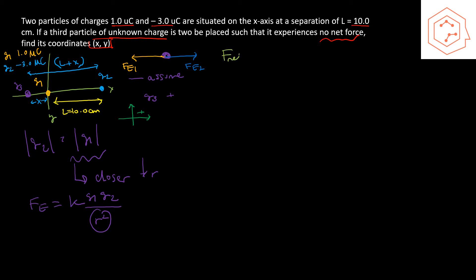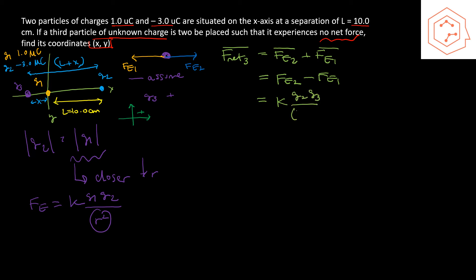The net force on q3 equals Fe2 + Fe1. Considering the x-direction: Fe2 − Fe1 = 0. Substituting Coulomb's Law: k·|q2|·|q3|/(l+x)² − k·|q1|·|q3|/x² = 0. Dividing through by q3 and by k, both cancel out, and we immediately see that the sign of q3 — whether positive or negative — does not matter.